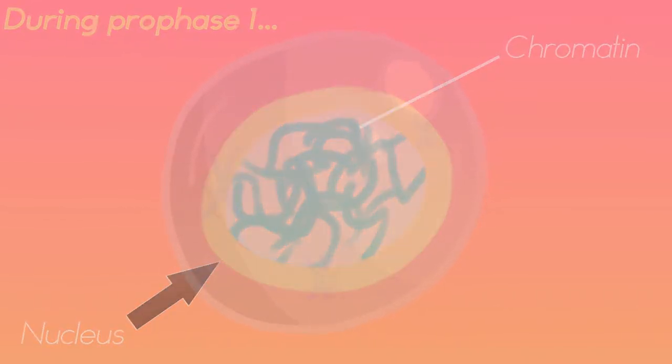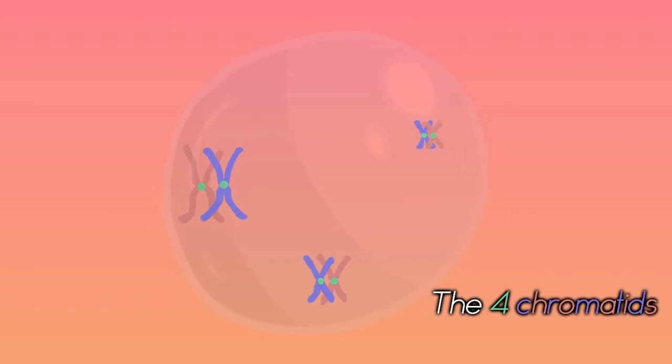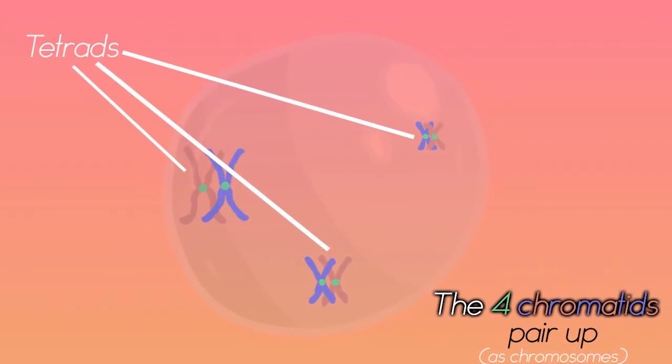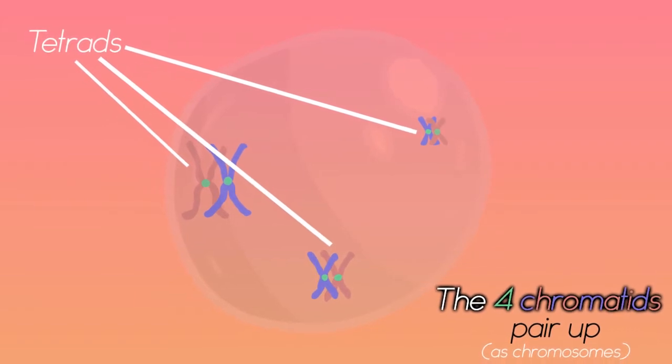The nuclear membrane starts to disappear and the four chromosomes come together in pairs of two, making what is known as the tetrad. Prophase I is one of the most important phases of meiosis since it is where crossing over can occur.